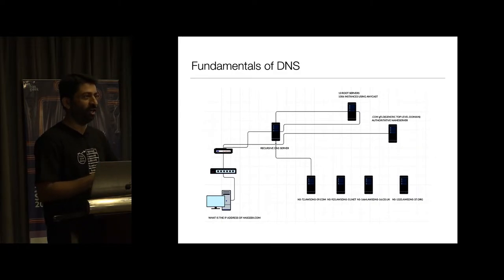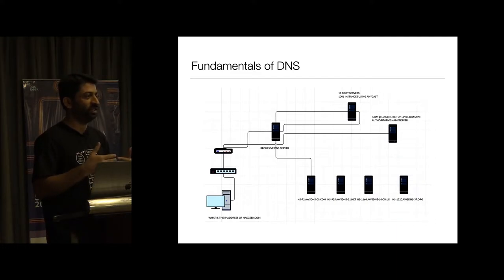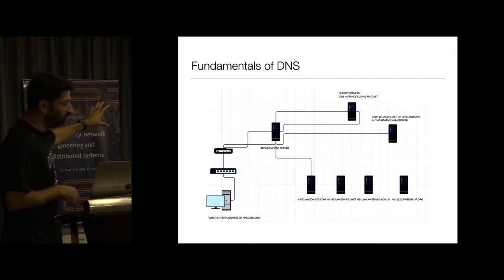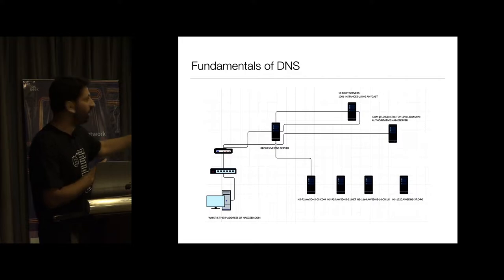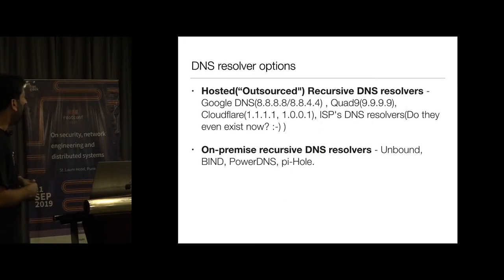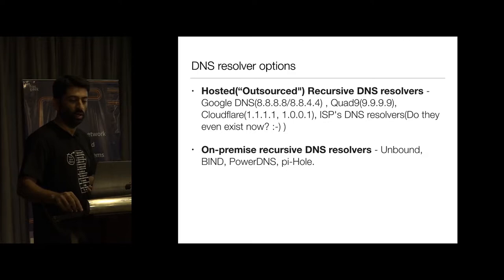These days ISPs have outsourced DNS resolution to cloud providers. You have Google 8.8.8.8, Cloudflare 1.1.1.1, and Quad9 which is 9.9.9.9. My focus is primarily on the recursive DNS aspect — I'm not going into authoritative or root DNS. The security element I'm proposing is on the recursive side. People running their own recursive DNS servers would ideally use open source software like BIND, Unbound, or PowerDNS.